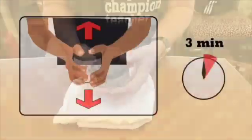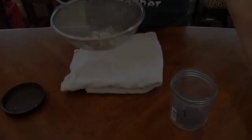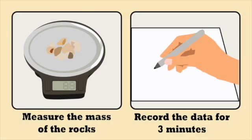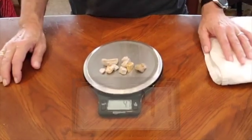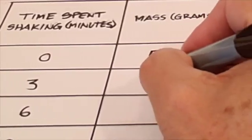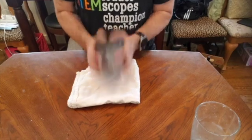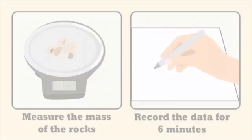Now we'll return the rocks to the jar, seal the jar tightly, and shake for three minutes. Once again, we'll remove the excess water and measure the mass of the rocks, recording this new data in the row for three minutes. Then we shake the rocks for three more minutes, and measure and record the mass for six minutes.